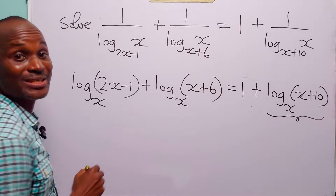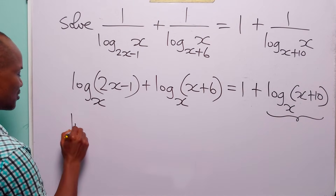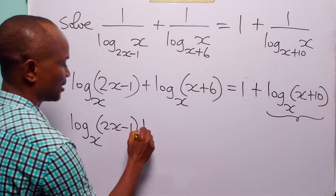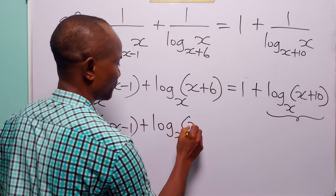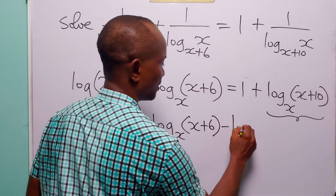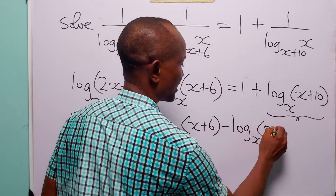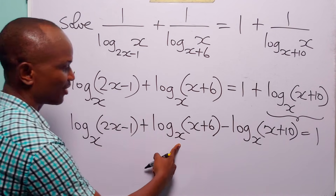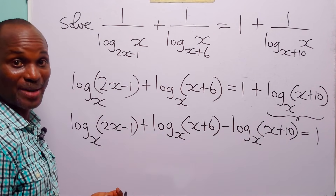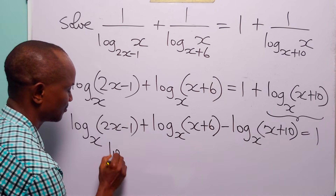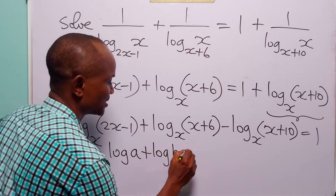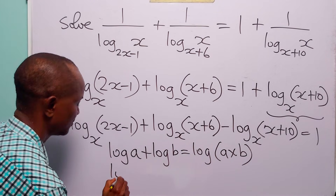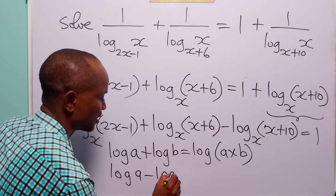Now let us move this term over to the left hand side. When we do that, this equation becomes: log to base x of (2x minus 1) plus log to base x of (x plus 6) minus log to base x of (x plus 10) is equal to 1. Since these three logarithms have the same base, we can combine them.